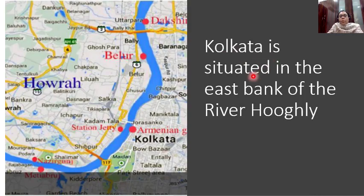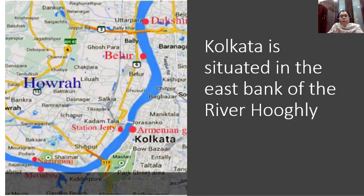Kolkata is situated on the east bank of the River Hugli. You can see Kolkata — K-O-L-K-A-T-A — on the east side of the river. This is the east side of River Hugli. You have to remember the name: Kolkata is situated on the east bank of River Hugli.